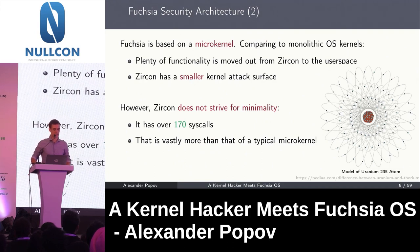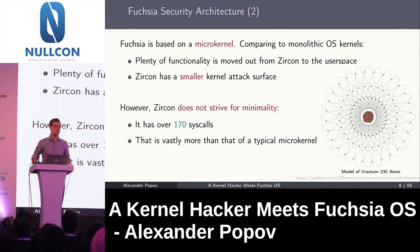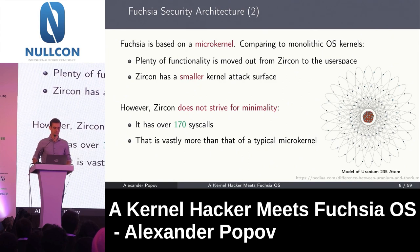The second interesting aspect: Fuchsia is based on a microkernel, so it has a smaller kernel attack surface compared to monolithic kernels. At the same time, Fuchsia developers don't have a goal to make Zircon really minimal. This microkernel has over 170 system calls — quite a lot compared to other typical microkernels — so it is a complex target.